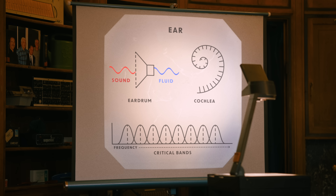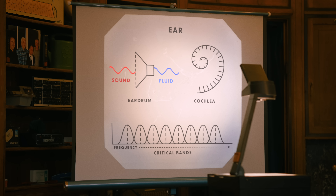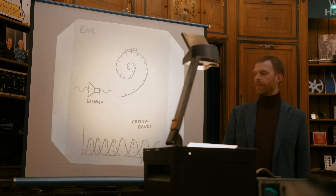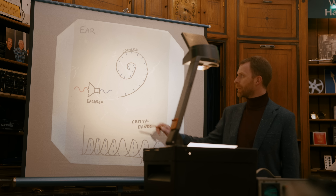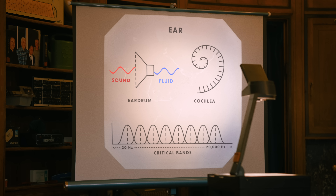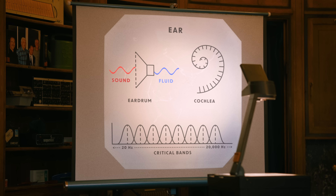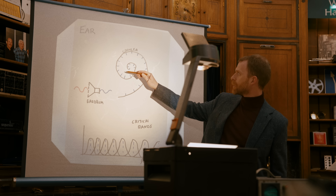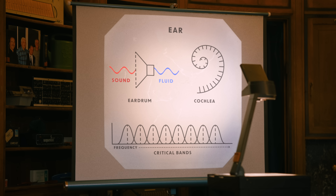These hairs in the cochlea function as what are called bandpass filters. A bandpass filter lets through a certain range of frequencies and filters out all the rest. They're called the critical bands. There are 24 of them and they span the range of human hearing from 20 Hertz all the way up to 20,000 Hertz. This is the range of frequencies that can be picked up by our eardrum and transduced into signals in the liquid in our inner ear, and the range of frequencies which can be picked up by the bandpass filters in the cochlea and directly converted into electrical signals that get sent to our brains.